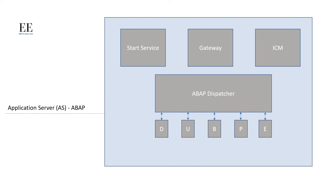Now let us talk about the components of an application server. An application server consists of components like ABAP dispatcher, gateway, internet communication manager, start service, and work processes. The ABAP dispatcher distributes the work to the work processes depending on the type of request that comes through. The gateway enables the SAP system to communicate with other SAP and non-SAP systems using RFC (remote function call) functionality via the TCP/IP protocol. ICM, the internet communication manager, handles HTTPS and SMTP type requests from the internet. So depending on the type of request, it is handled by either the ABAP dispatcher, the gateway, or the ICM.